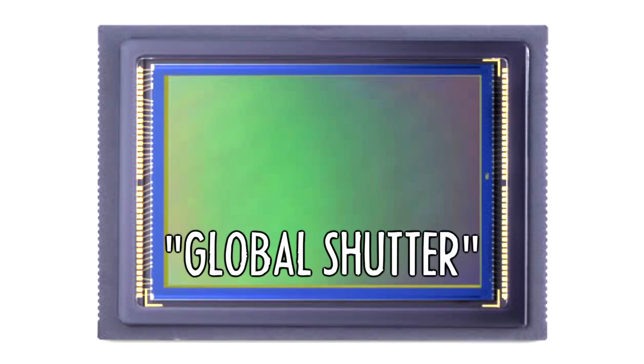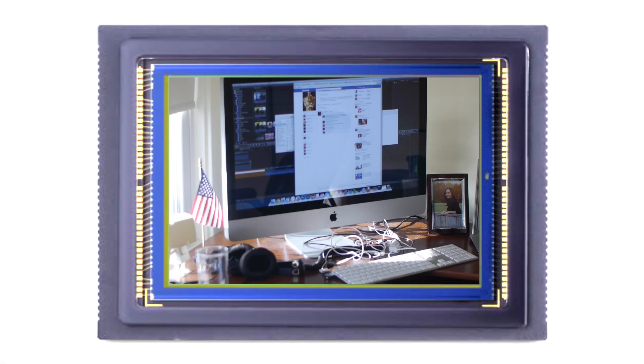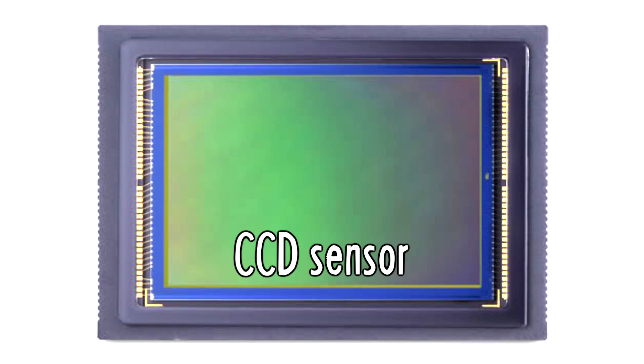When you hear the phrase 'global shutter,' that means the camera captures the whole image at once — that's how CCD sensors work, which eliminates the rolling shutter problem. There are also software solutions like Final Cut Pro X's rolling shutter filter, which does a decent job. But I just try to avoid quick pans, or accept that that's just what video looks like.